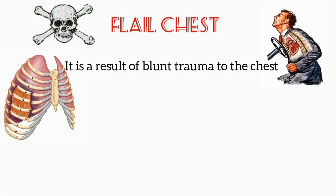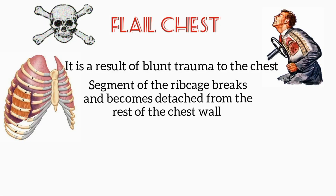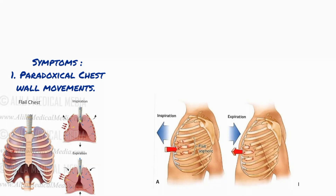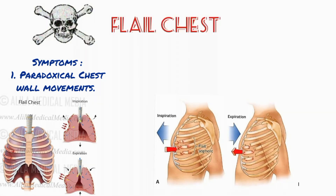Now let's move on to flail chest. It is a result of blunt trauma to the chest, and it occurs when a segment of the rib cage breaks and becomes detached from the rest of the chest wall. In this condition, multiple adjacent ribs are fractured in multiple places. Think of this when you see paradoxical chest wall movements, in which during breathing a section of the chest moves in the opposite direction to the rest of the chest wall.